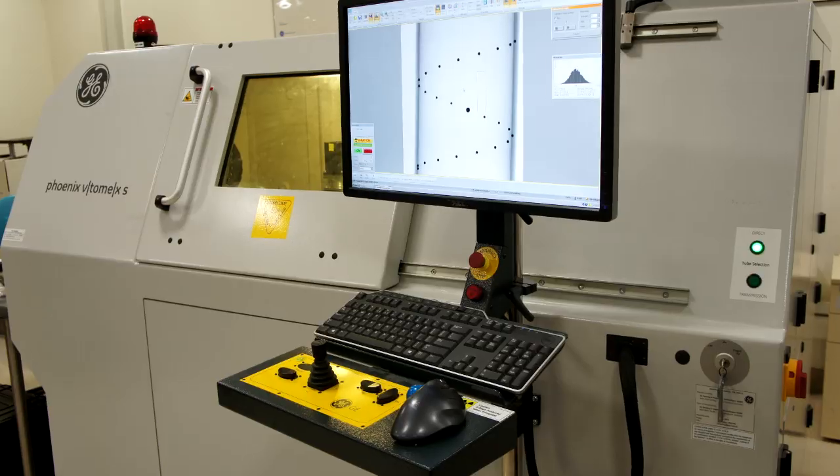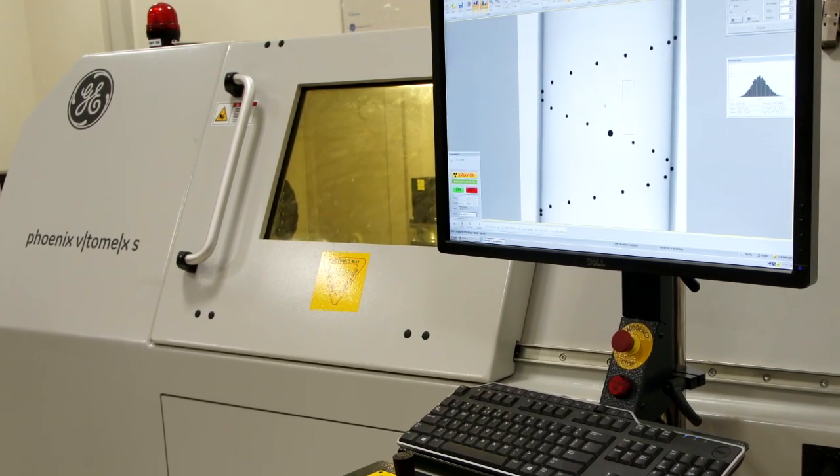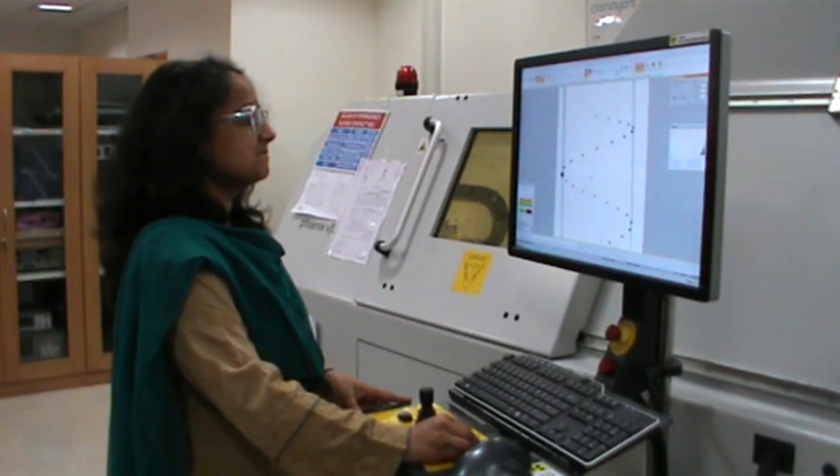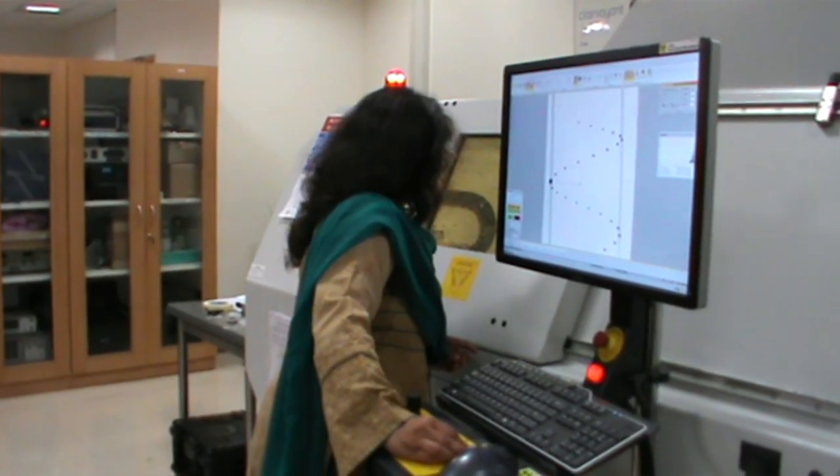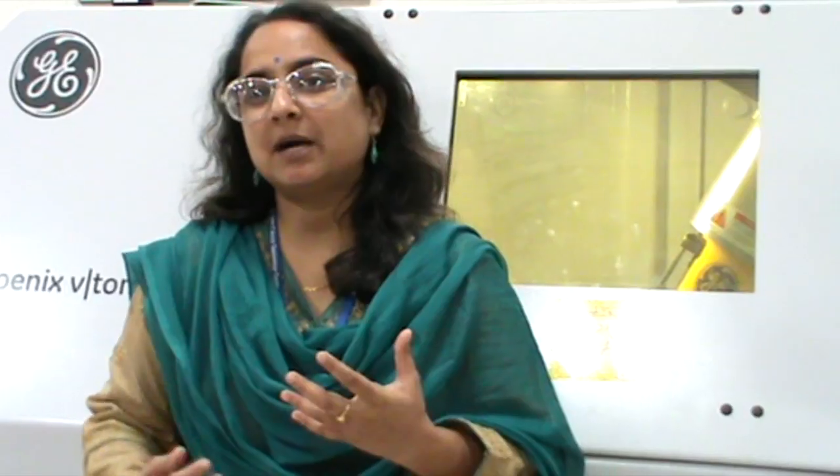But today, you can actually look through the complete volumetric information and enable accurate dimensional measurements. You can now understand the materials behavior itself and these information can help in changing, optimizing your manufacturing processes. You can also look at the well-being of these systems while they are in operation without having to stop them.